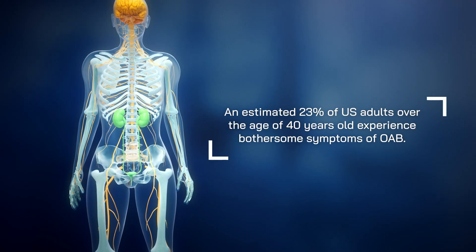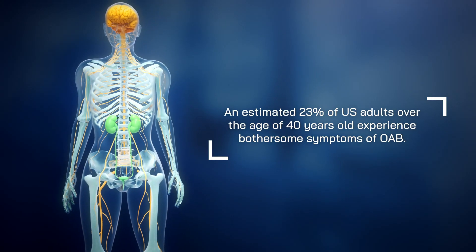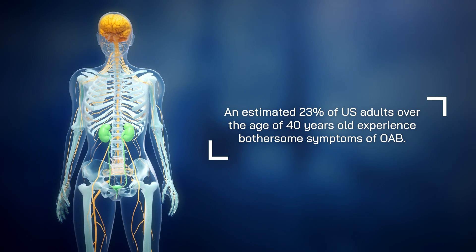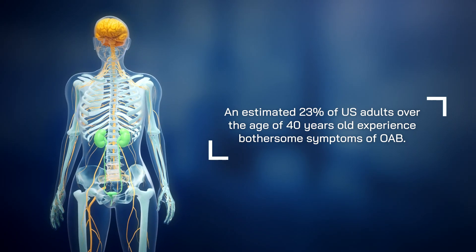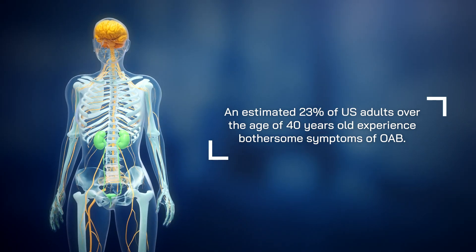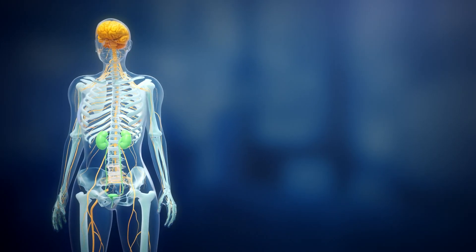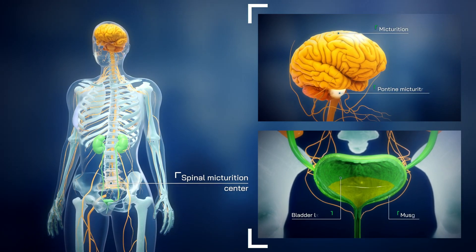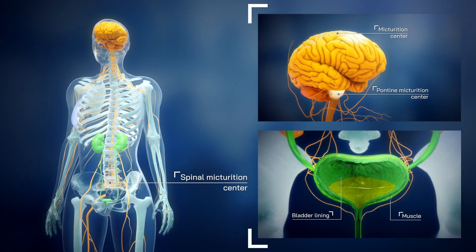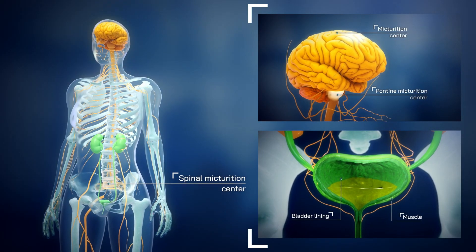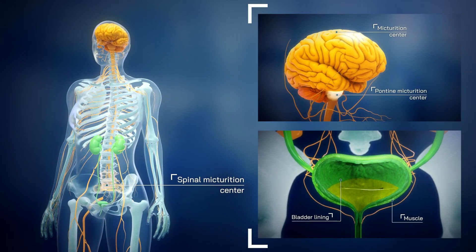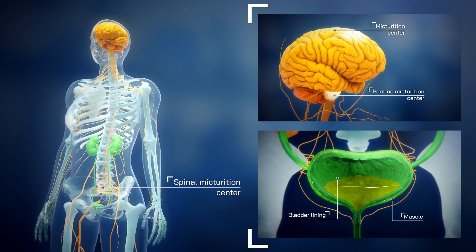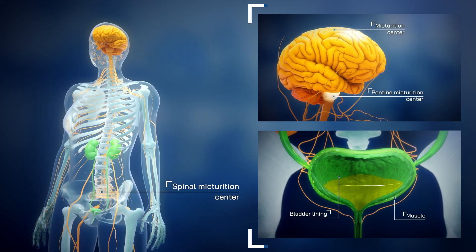An estimated 23% of U.S. adults over the age of 40 years old experience bothersome symptoms of OAB. It can occur as a result of neural impulses, irritation of the inner lining of the bladder, as well as changes in the bladder detrusor muscle and nerve signaling of the lower urinary tract.